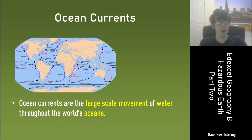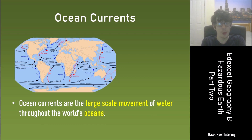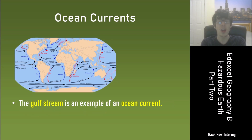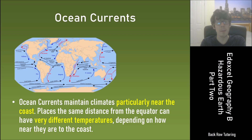On top of this you need to know about ocean currents. Ocean currents are the large scale movement of water throughout the world's oceans. The Gulf Stream is an example of an ocean current. Ocean currents maintain climates, particularly near the coast.